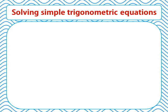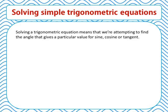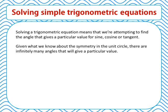Now we're ready to solve simple trigonometric equations. Solving a trigonometric equation means that we're attempting to find the angle that gives a particular value for sine, cosine, or tangent. Given what we know about the symmetry in the unit circle, there are infinitely many angles that will give a particular value for sine, cos, or tan.